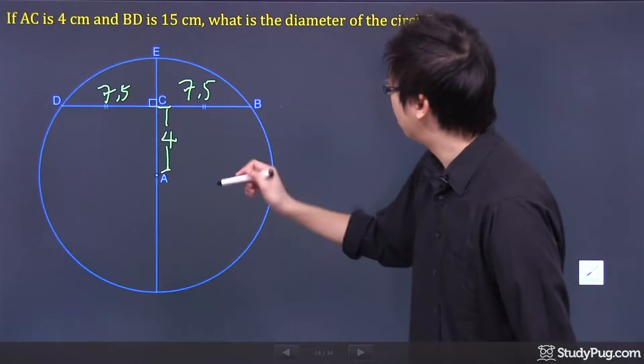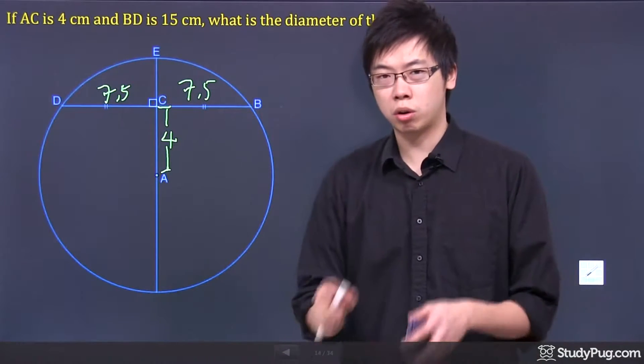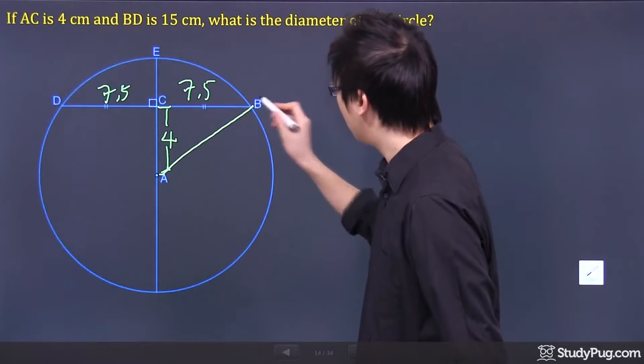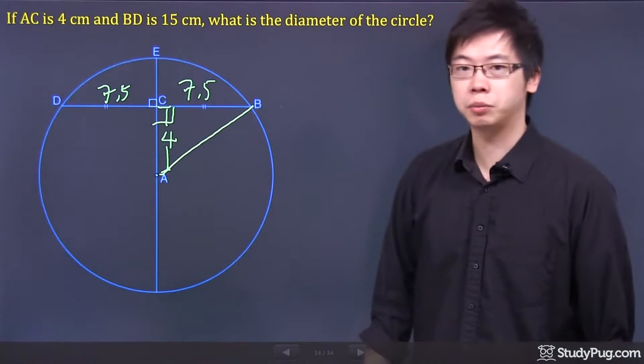Take a look. They're looking for the diameter of a circle, but we can actually draw our own radius. See, from here to here, A to B. The reason I actually draw a line right here is because I want to form a right triangle.